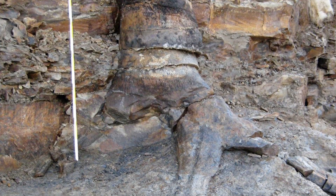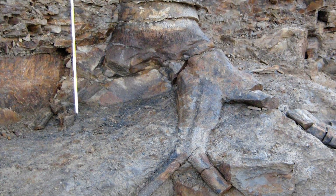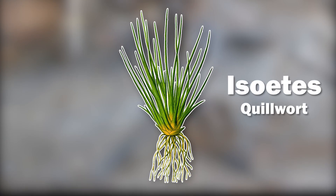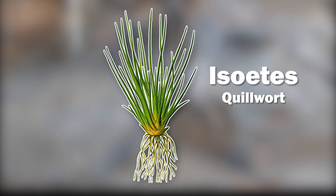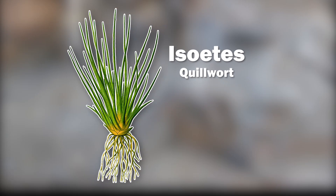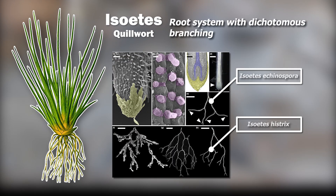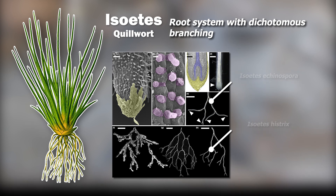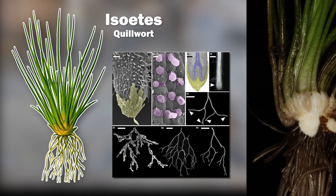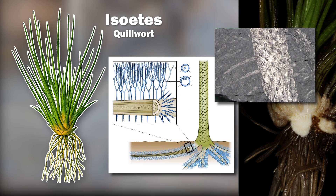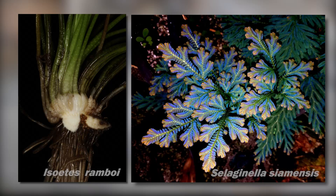The root system of Sigillaria, as with Lepidodendron and lepidophytes overall, is closely related to the current quillworts or Isoetes. Just like lepidophytes, quillworts have a root system characterized by dichotomous branching and the presence of rhizomorphs, interpreted as an equivalent of the Stigmarian root system of lepidophytes.